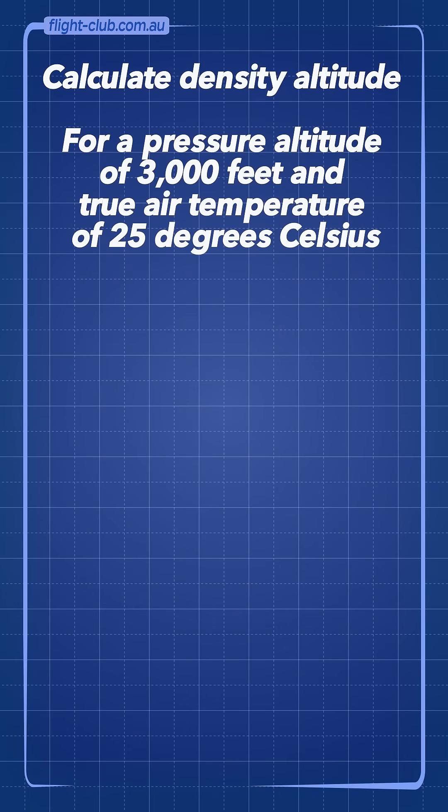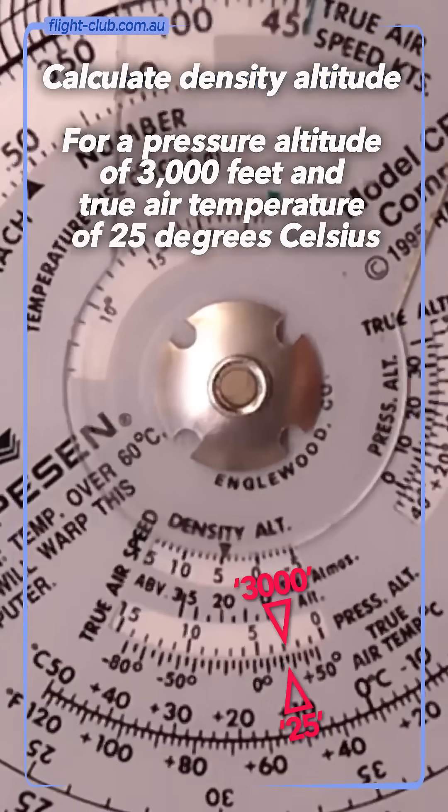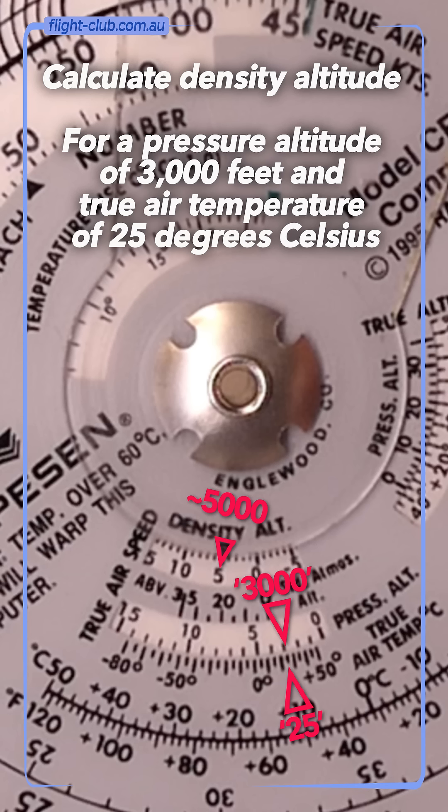Calculate density altitude – for a pressure altitude of 3000 feet and true air temperature of 25 degrees Celsius, place 3000 opposite 25 and read the density altitude opposite the arrow in the density altitude window. The answer is 5000 feet.